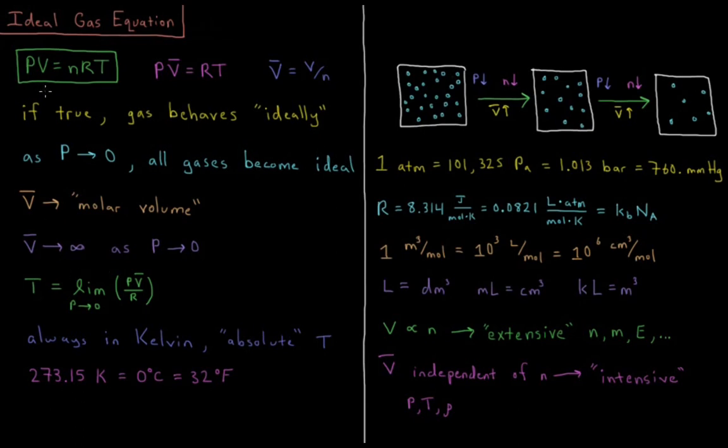Since all gases behave ideally at very low pressure, this is one way we can indicate the temperature of an ideal gas. The temperature of an ideal gas is the limit as the pressure goes to zero of the pressure times the molar volume divided by the gas constant.